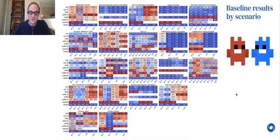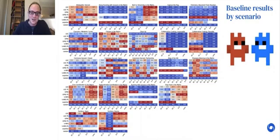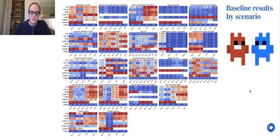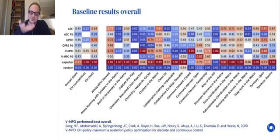There's a huge number of results. I'll point anyone interested to the paper. This slide is breaking it out by scenario, but I'll focus more at a higher level. This slide has results broken down by substrate. Each substrate has many scenarios and also the overall scores. Overall, the VMPO agent performed the best. We tried six different baseline algorithms, and three of them were selfish. Three of them were pure pro-social utilitarian maximizers.